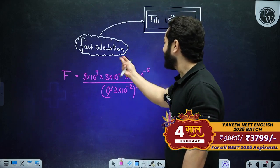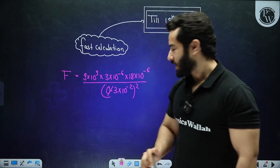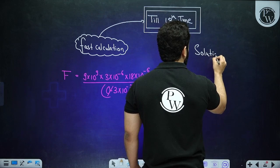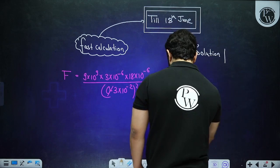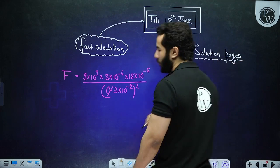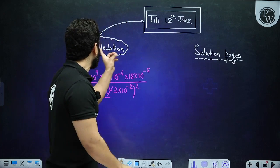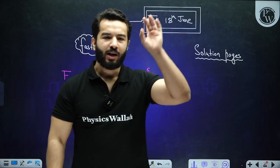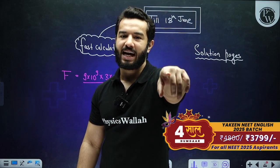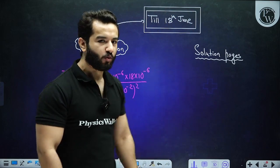How to solve calculations like these — that's what I am calling fast calculation. What you can do is just open any book, open the solution pages of any book. Let's suppose you open a PW module — don't look at the question, don't read the question. This is the target I am giving for fast calculation till 18th June. The students who follow this strategy, after coming into class, will tell me whether it worked or not.